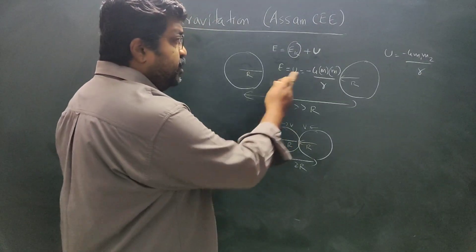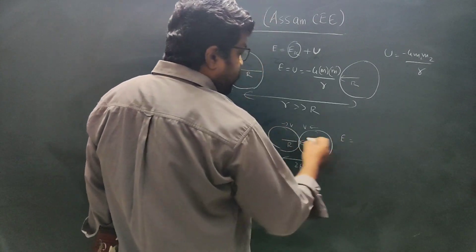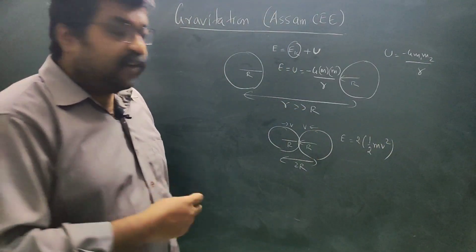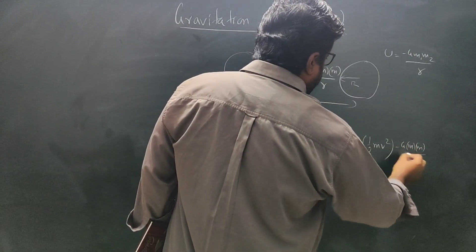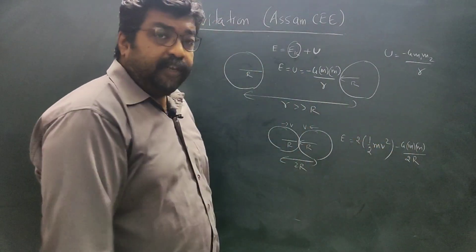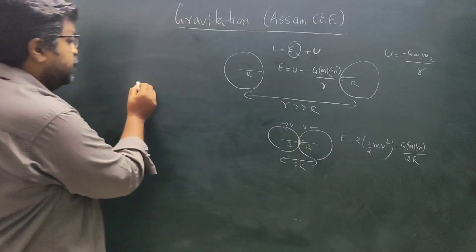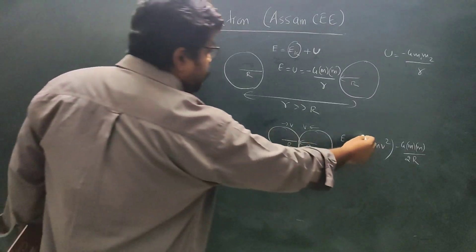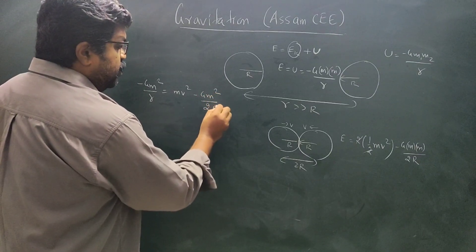This is the initial total energy. What is the final total energy? The final kinetic energy is 2 times one-half M v squared, which equals M v squared. The final potential energy is minus G M squared divided by 2R, since at collision the centers are separated by twice the radius R. So this is the final energy. By the principle of conservation of energy, initial energy equals final energy: minus G M squared by R equals M v squared minus G M squared divided by 2R.